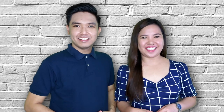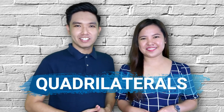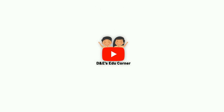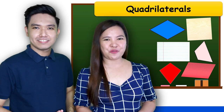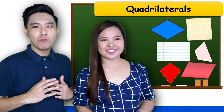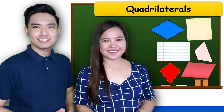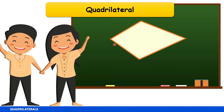Welcome to our math tutorial. Our topic is about quadrilaterals. All the figures shown at the right are examples of quadrilaterals. A quadrilateral is a polygon with exactly four sides and four angles. The sum of the interior angles of a quadrilateral is 360 degrees. For example, the measure of each angle in this quadrilateral is 70 degrees, 130 degrees, 52 degrees, and 108 degrees.